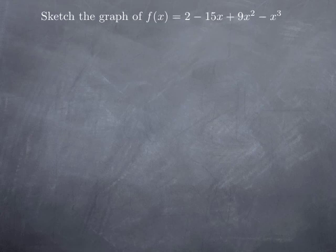Let's say we want to sketch the graph of the function f given by 2 minus 15x plus 9x squared minus x cubed. It's a polynomial function, so it's defined on the real line. It doesn't have any asymptotes.